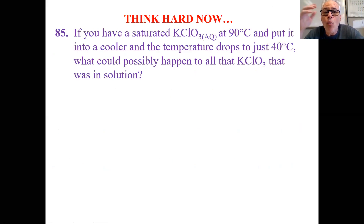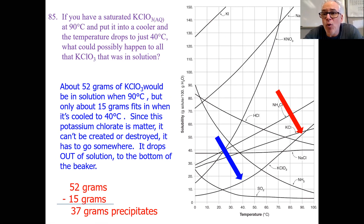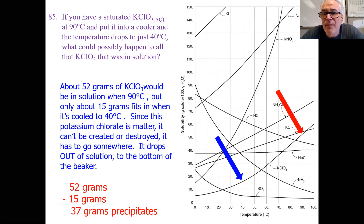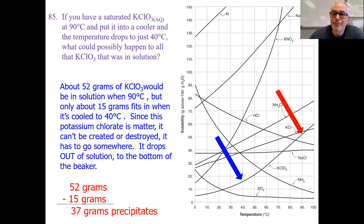What's going to happen to all that KClO3? You've got 52 grams dissolved. If you cool it down, so much less is going to fit. The rest of it falls out of solution. The water, instead of juggling really fast, starts to juggle slower and slower and drops a lot of the potassium chloride — 37 grams. The curve tells us how much you can hold when you're hot, and when you make it cold, how much you can hold. The difference falls out of solution.